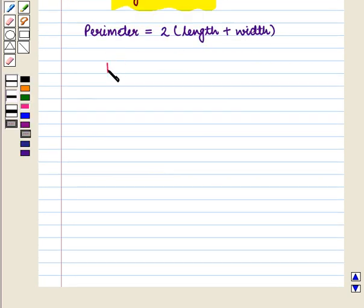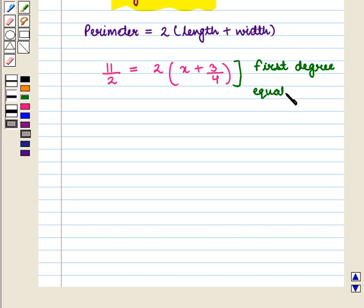We get 11/2 = 2(x + 3/4). Now this is a first degree equation in x. So now we solve it for x.